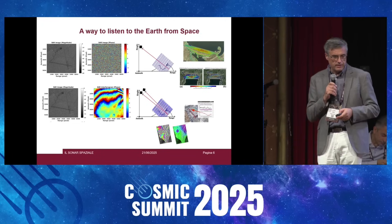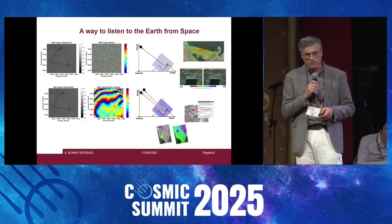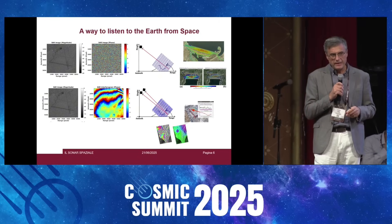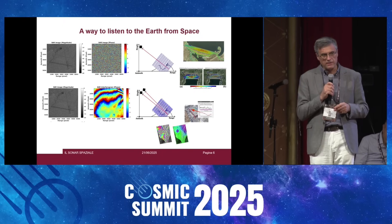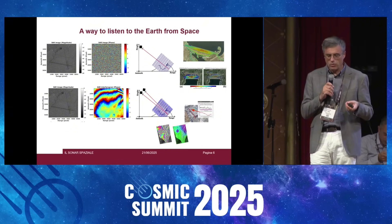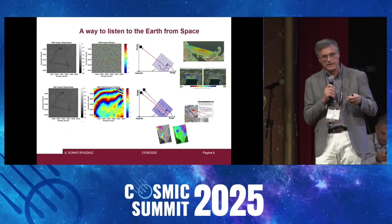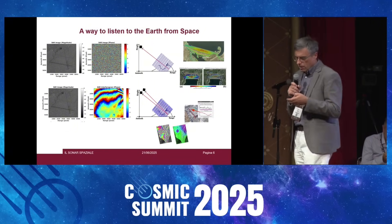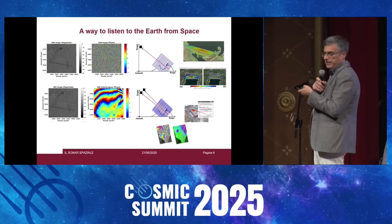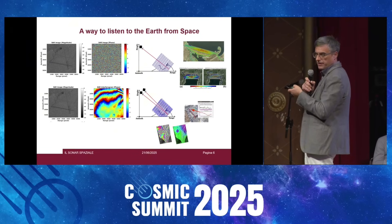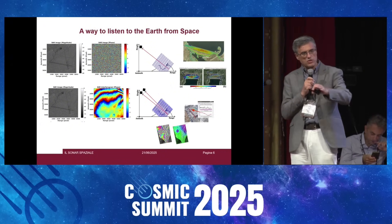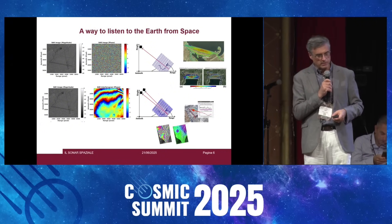Here I show you the interferometric capabilities of synthetic aperture radar. When we are using two satellites, we can build up in space an interferometer. According to the coherent nature of electromagnetic waves, we are able to analyze interferometric patterns — these are the phase fringes of the data — and we can use this information to retrieve topographic mapping.